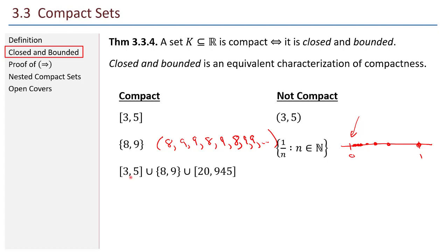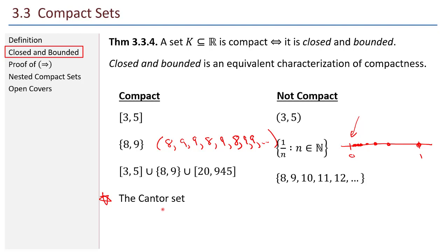Taking finitely many compact sets and unioning them together still gives a closed and bounded set. Isolated points like 8, 9, 10, 11, 12, forever — the entire set is closed but not bounded, and clearly the sequence 8, 9, 10, 11, 12, ... has no convergent subsequence. The Cantor set is a first weird example of a compact set — it's closed and bounded, so it is compact. Also, the set of all rational numbers from 0 to 1 inclusive is not compact because it is not a closed set.